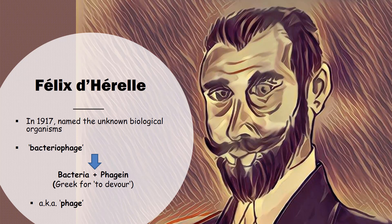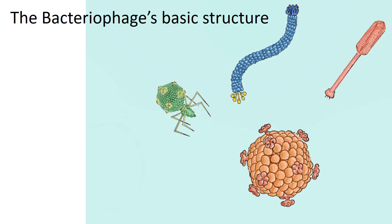At this point, the world would have to wait 22 years to see the first images of bacteriophage using the newly invented electron microscope. Today, more than 5,000 different types of bacteriophages have been identified, with only a fraction of these being extensively studied.